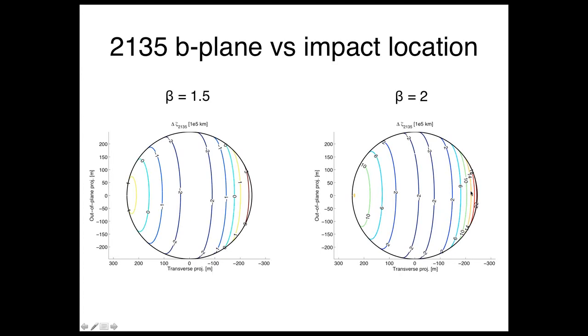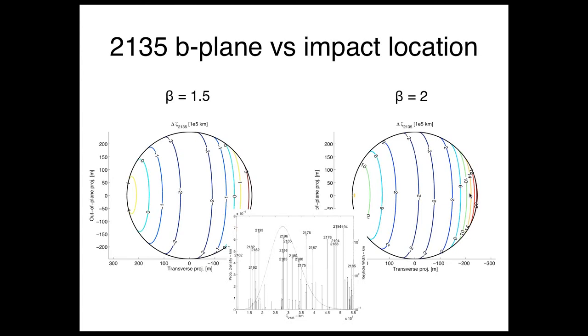If you have beta equal to 2, you have much more ejecta, and if you hit it on the side over here on the right, you can get up to upwards of a million or more kilometers of deflection in 2135 by hitting it on the side. This points to the idea that we can choose where we strike the asteroid to get the asteroid where we want it to go.